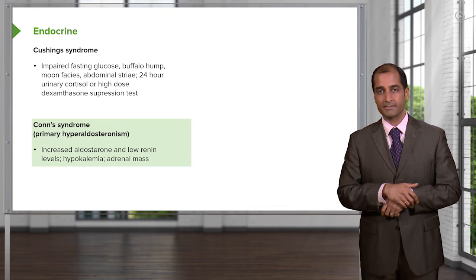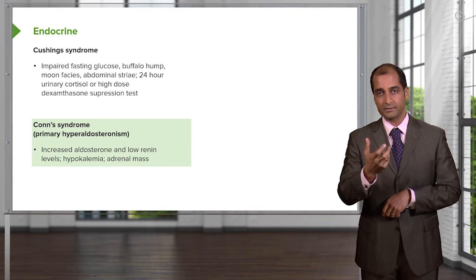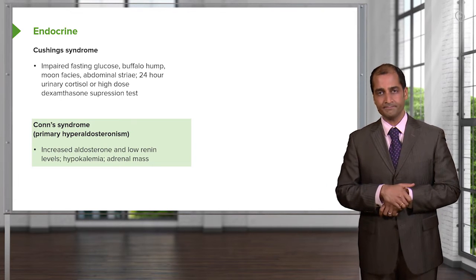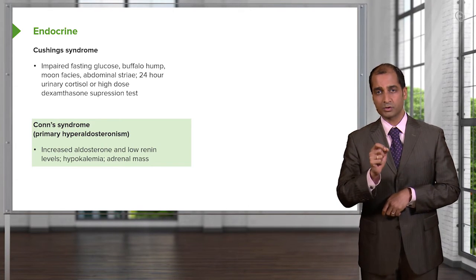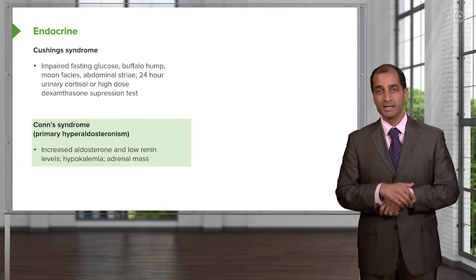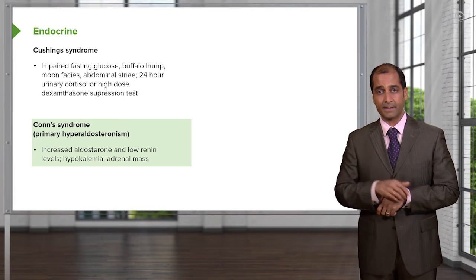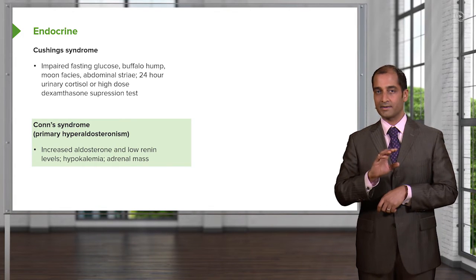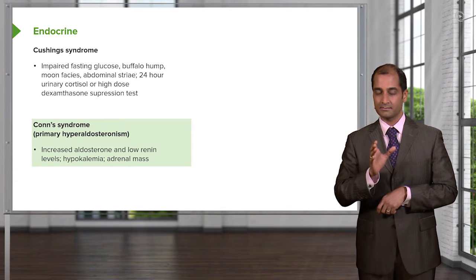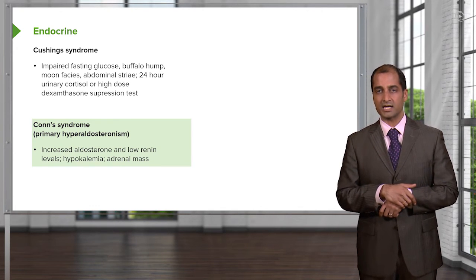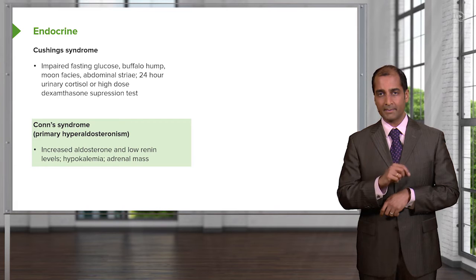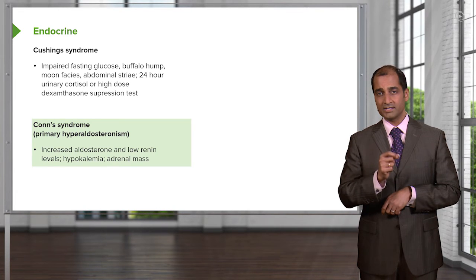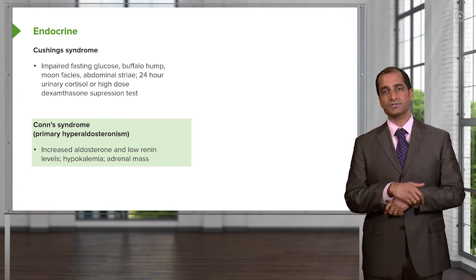Primary means that the pathology is actually taking place from that organ. Aldosterone comes from the adrenal cortex — specifically the glomerulosa, the most superficial layer. You have a tumor there producing too much aldosterone. This is called Conn's syndrome — primary hyperaldosteronism causing secondary hypertension. How common is this? More common than one would think. Make sure you know about Conn's.